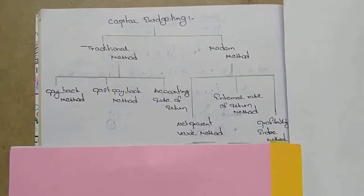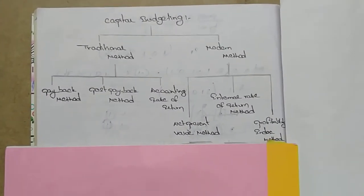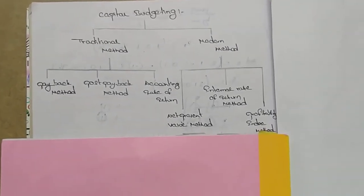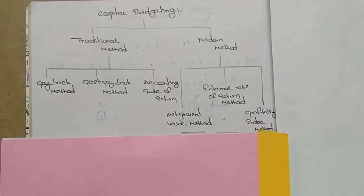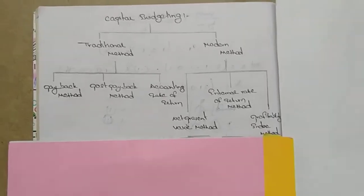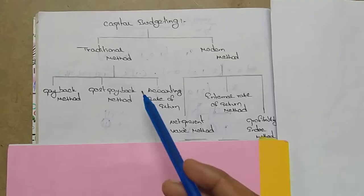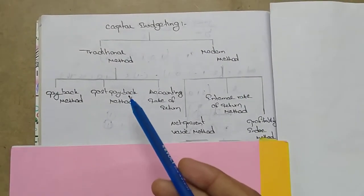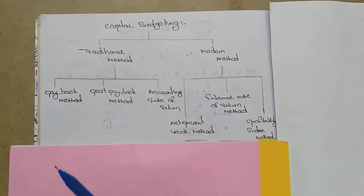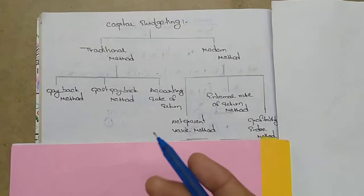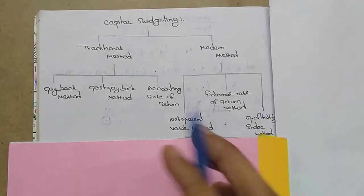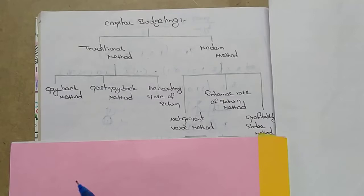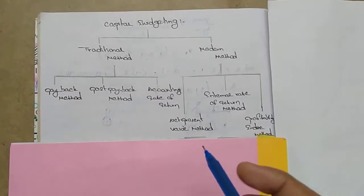Today's topic is capital budgeting, uneven format, payback method. Capital budgeting is used by companies to evaluate major projects or investments. It is divided into two types: traditional method and modern method. In the traditional method, the payback method is divided into two types of problems — even and uneven. The even loan problem was covered previously; check the description link.